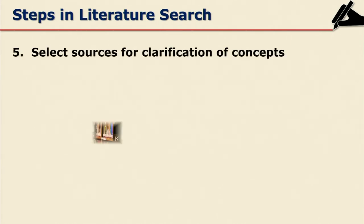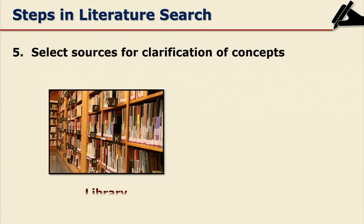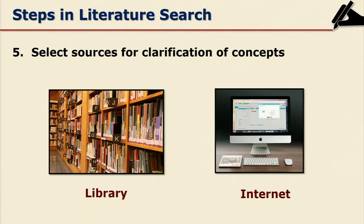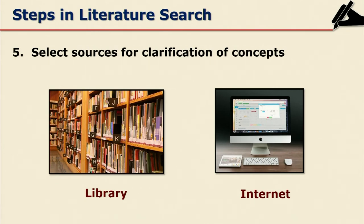For finding keywords or material, you have to select the sources for the clarification of concepts. From glossaries and other references, you have to go to both the library and the internet. Libraries can be digital, virtual, or physical, where you can get your concepts clarified. This is again an important step in literature search.